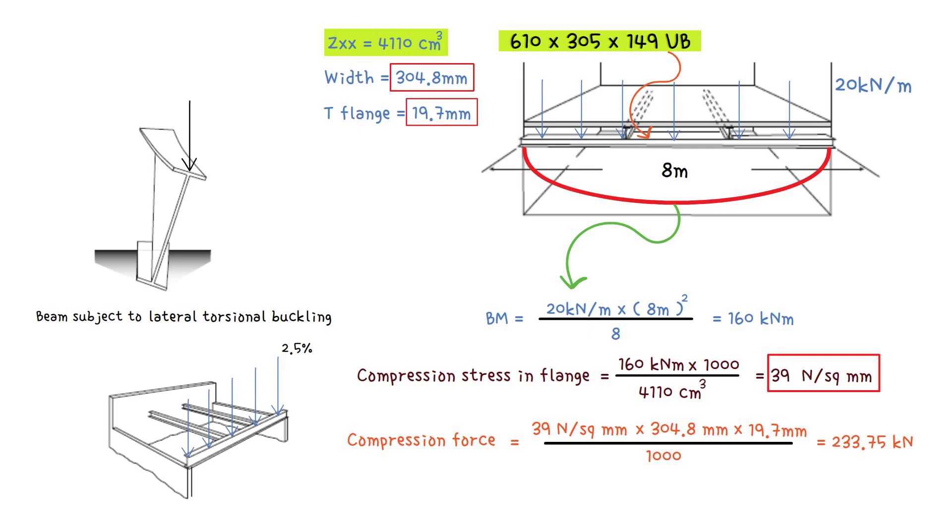As mentioned, a restraint to the top flange of a beam must be capable of resisting a force that is equivalent to 2.5% of the ultimate compression load in the top flange of the beam element it is restraining.